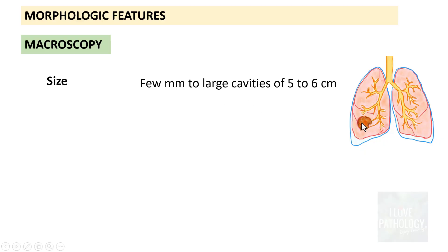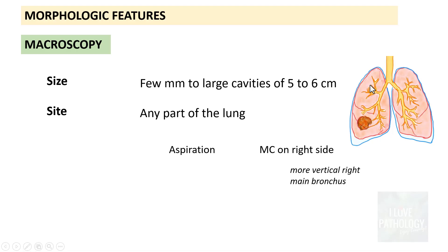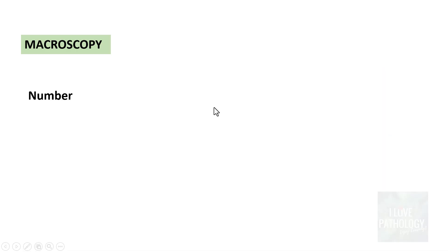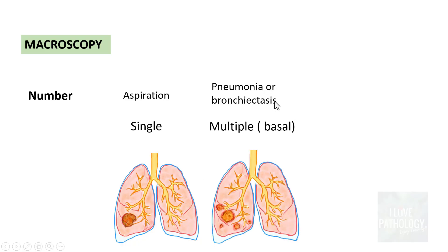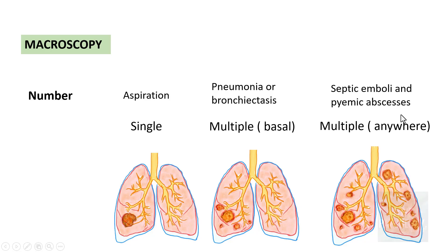What are the morphologic features of lung abscess on macroscopy? Abscess foci can be as small as a few millimeters to as large as five to six centimeters and can involve any part of the lung. If due to aspiration, it is usually on the right side because the right bronchus is more vertical than the left. If due to aspiration it is usually single and large; if due to pneumonia or bronchiectasis, multiple and basal; if due to septic emboli, multiple and scattered throughout the lungs.